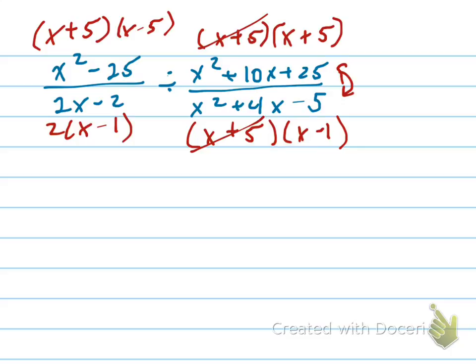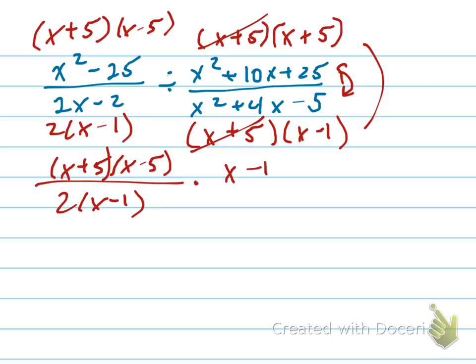I'll write it down here. It's going to be x plus 5, x minus 5, all over 2 times x minus 1 times. Now I'm flipping these here. The x minus 1 goes to the top. The x plus 5 goes to the bottom.